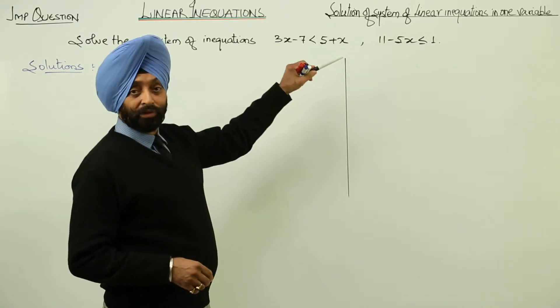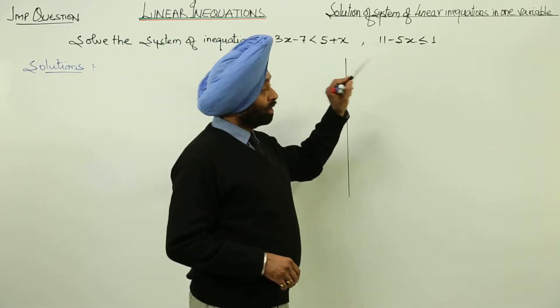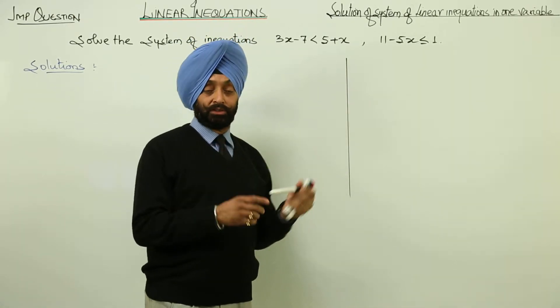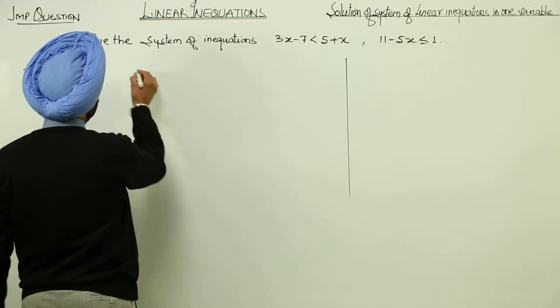Now, solution of system of linear inequalities. What we are having? We are having two simultaneous equations and we have to find the common answer. So now, just starting with equation one.